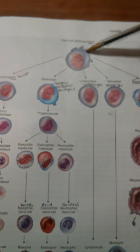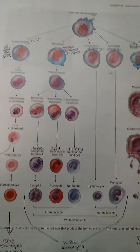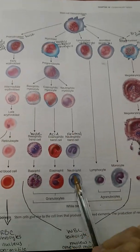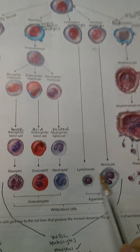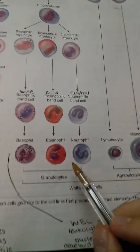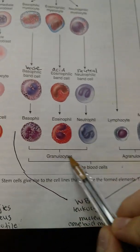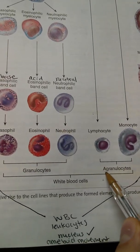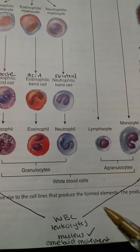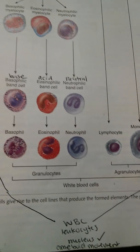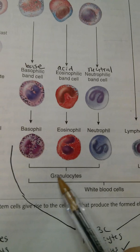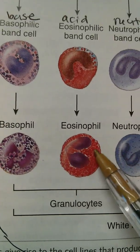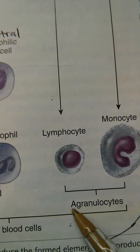If the stem cell wants to become a white blood cell, remember the two different classes: the ones ending in '-phil' are called granulocytes, and the ones ending in '-cyte' are called agranulocytes. The 'a' prefix means the opposite of, just like 'normal' versus 'abnormal.' Granulocytes have granules inside — you can see the little dots in them. Agranulocytes don't have granules; they're smooth and don't have the dots.